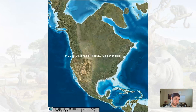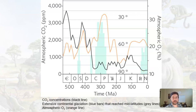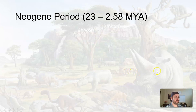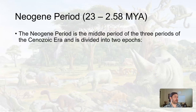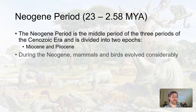Starting to get to modern day North America, but still not quite there. As we get into the Neogene, we will obviously be getting into some glaciation as well, which does have an effect on the organisms in part. It's the middle of three periods of the Cenozoic era, divided into two epochs: the Miocene and the Pliocene.